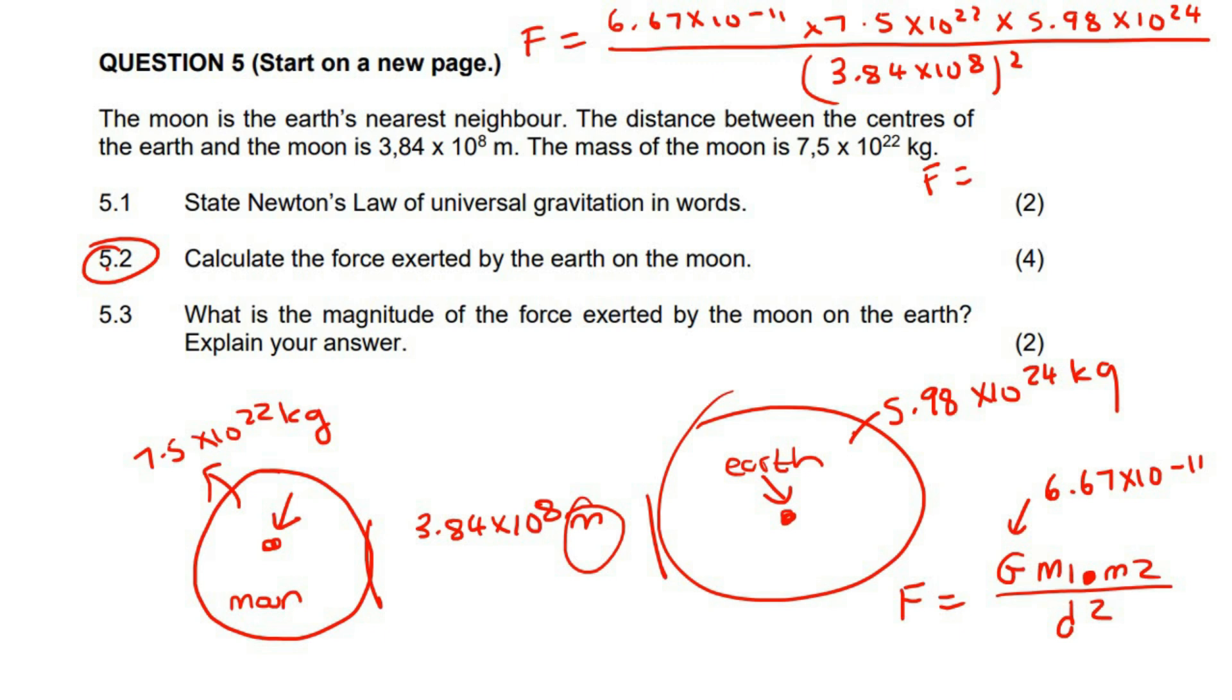6.67 times 10 to the negative 11 times 5.98 times 10 to the 24 over 3.84 times 10 to the 8 squared. Remember the squared. Oh, it's a big number. So, if we round to two decimal places, it's going to be 2.03 times 10 to the 20 Newtons.